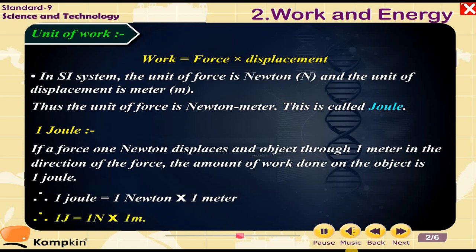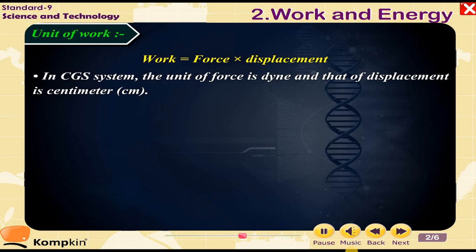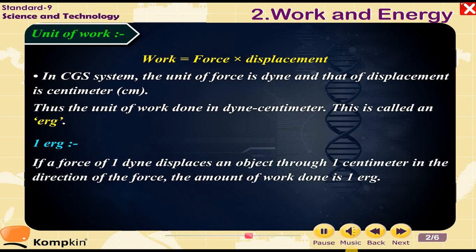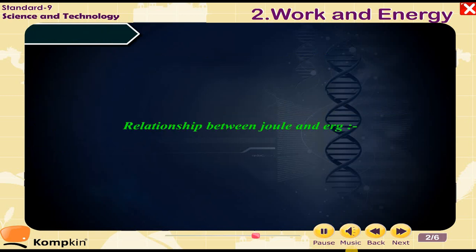In the CGS system, the unit of force is dyne and the unit of displacement is centimeter. Thus the unit of work done is dyne-centimeter, which is called an erg. 1 erg is defined as: if a force of 1 dyne displaces an object through 1 centimeter in the direction of the force, the amount of work done is 1 erg. Therefore, 1 erg = 1 dyne × 1 cm.